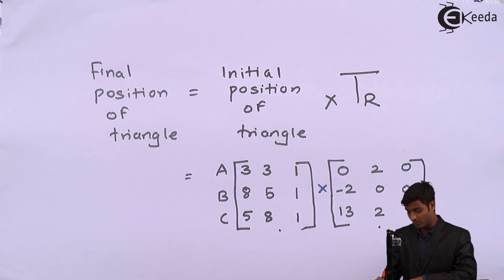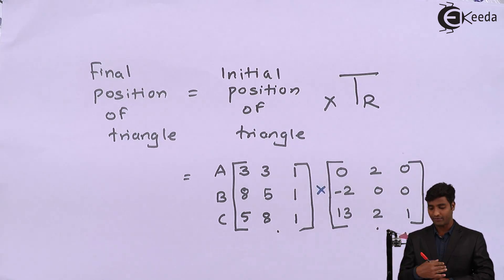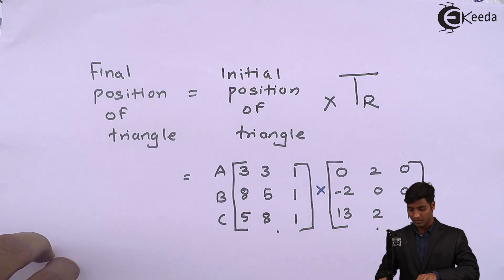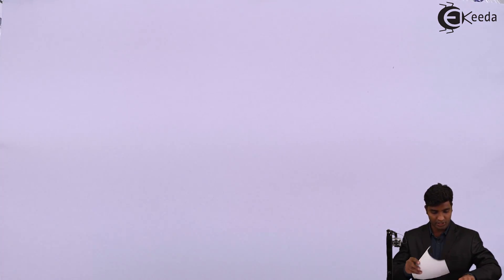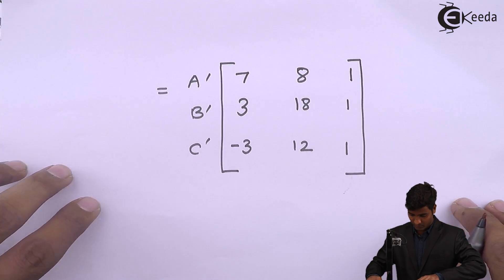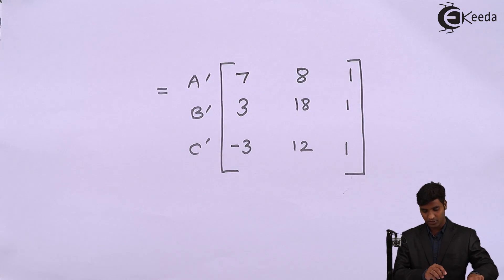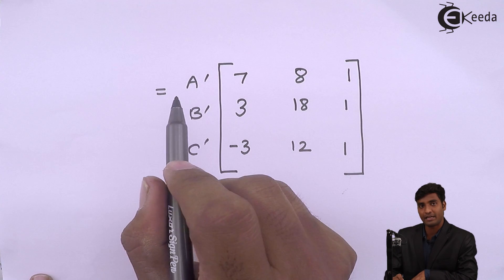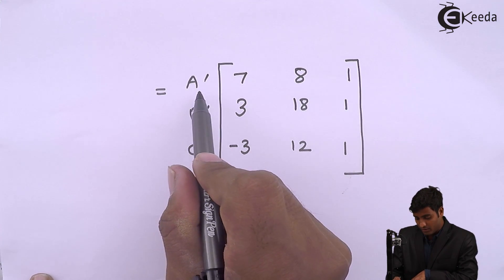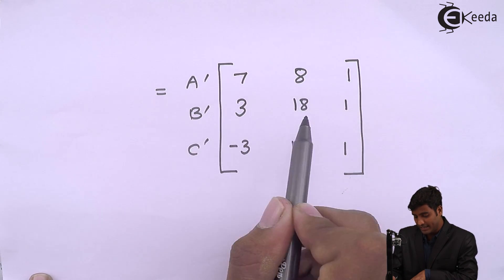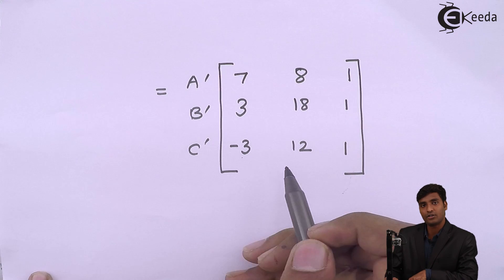After multiplying the matrices, I get the final position. A dash is (7, 8), B dash is (3, 18), and C dash is (-3, 12). I will now convert the matrix form of the vertices back into coordinate form.